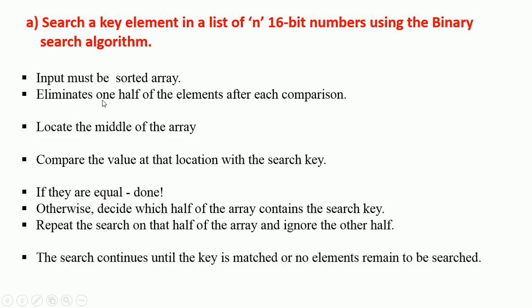What is the logic behind this? What is the algorithm for this? Actually, here one important thing is what? Input must be sorted array. That is very important. Then, what is the next one? This algorithm eliminates one half of the elements after each comparison. So, locate the middle of the array. What is next? Compare the value of that location with search key. If they are equal, done. Otherwise, decide which half of the array contains the search key. Either you have to go for lower half or upper half. Repeat the search on that half of the array and ignore the other half. The search continues until the key is matched or no elements remain to be searched. So, this is the algorithm for binary search.